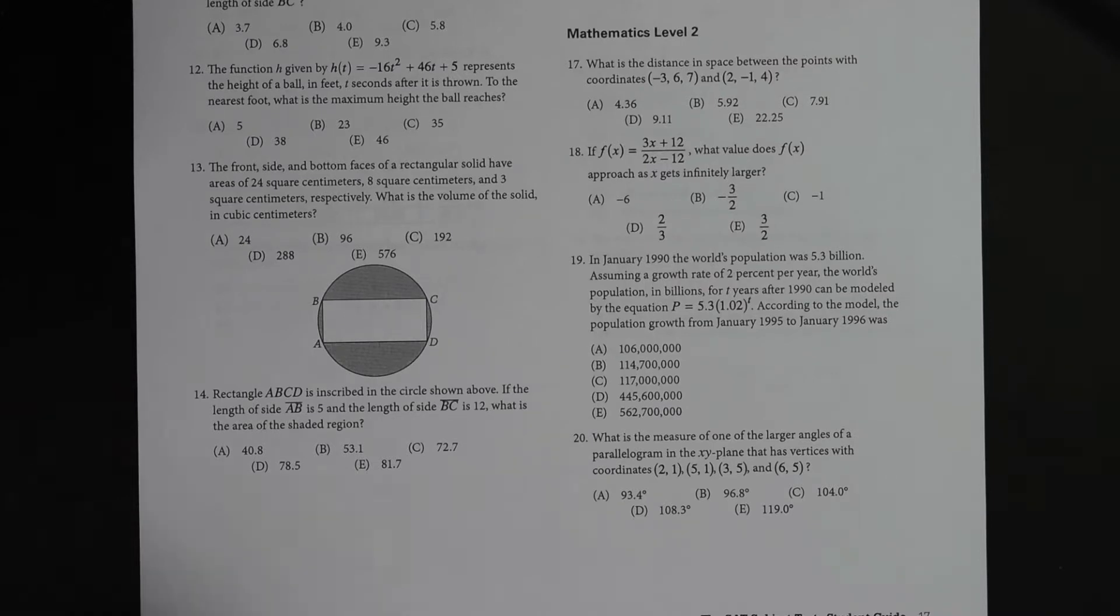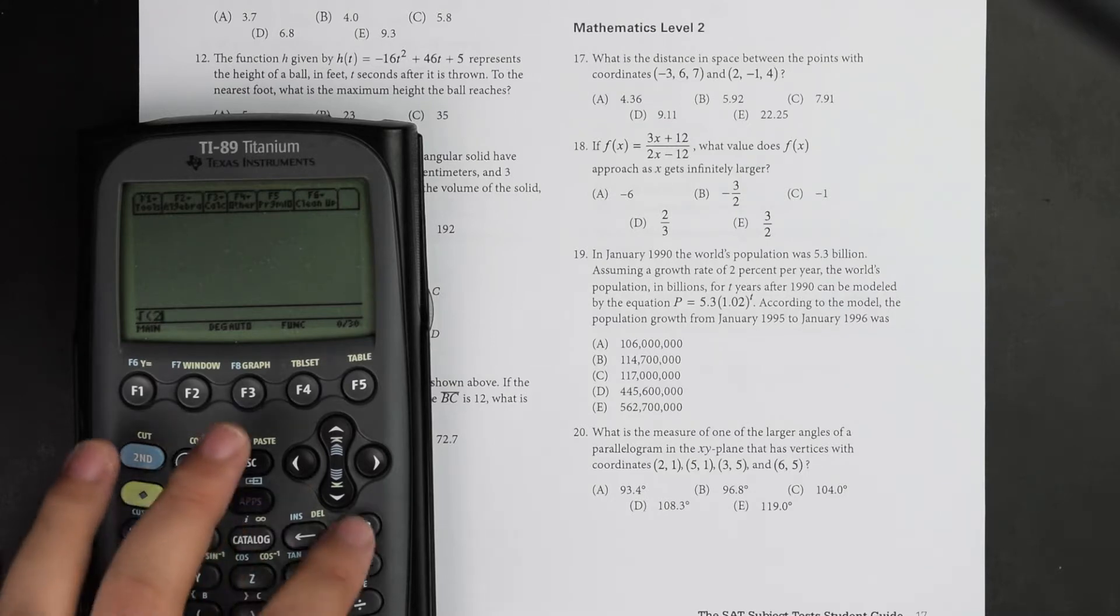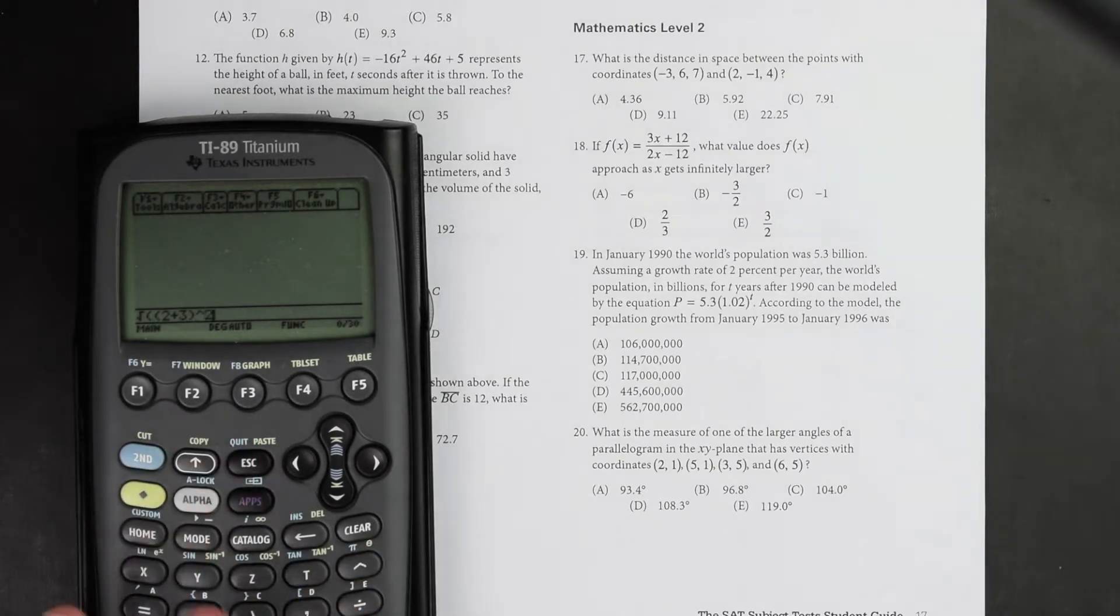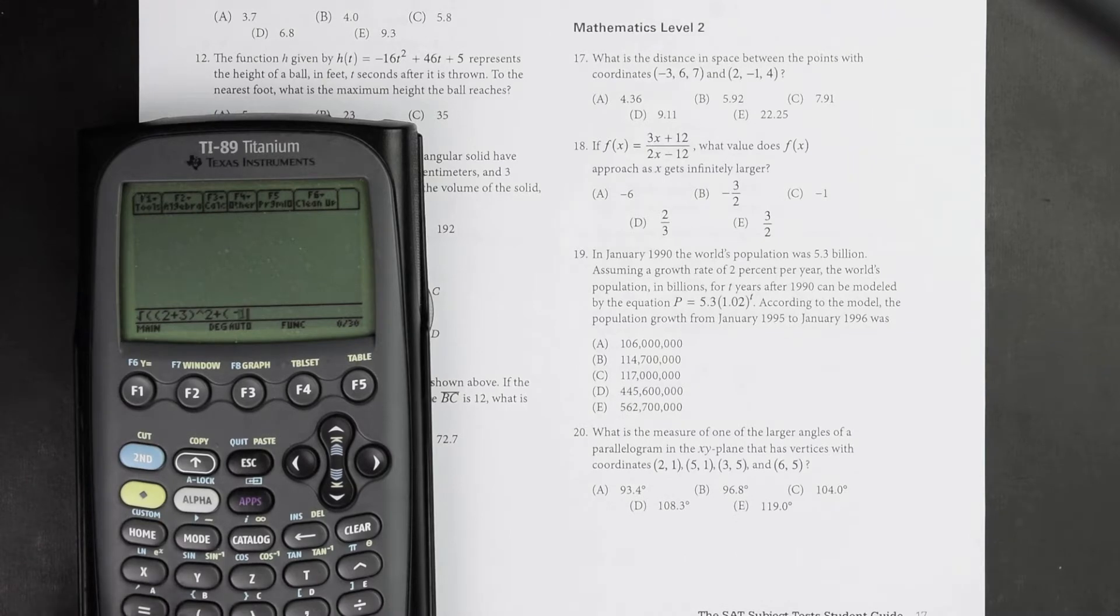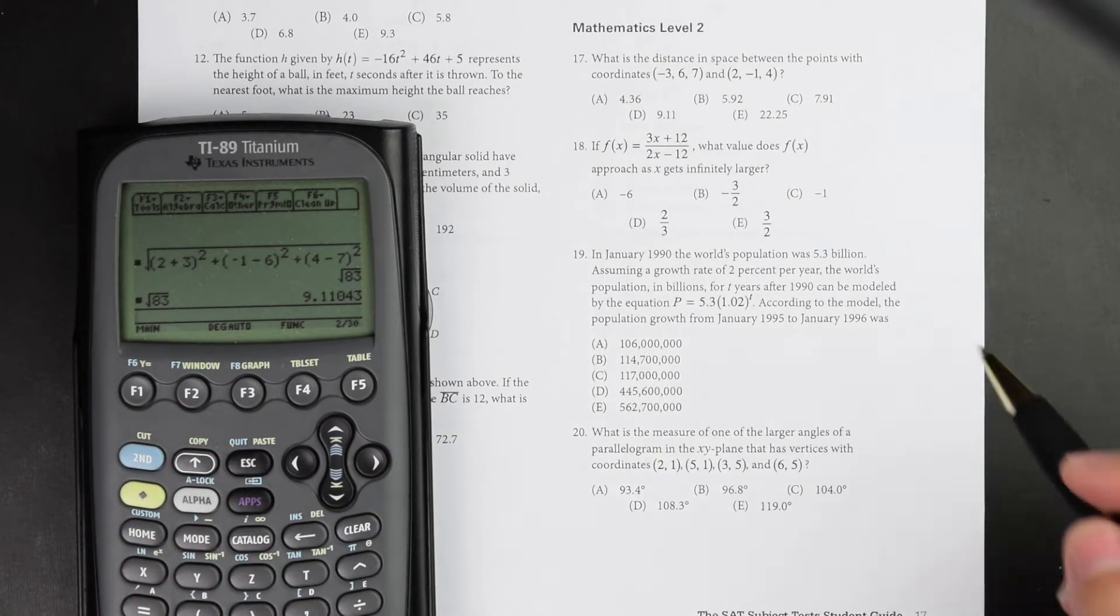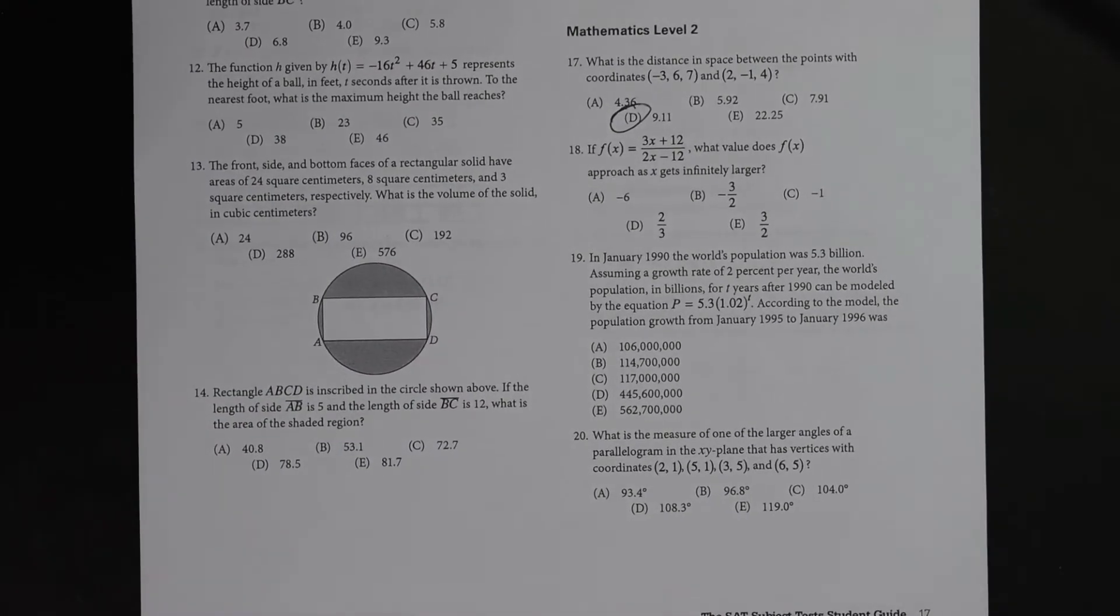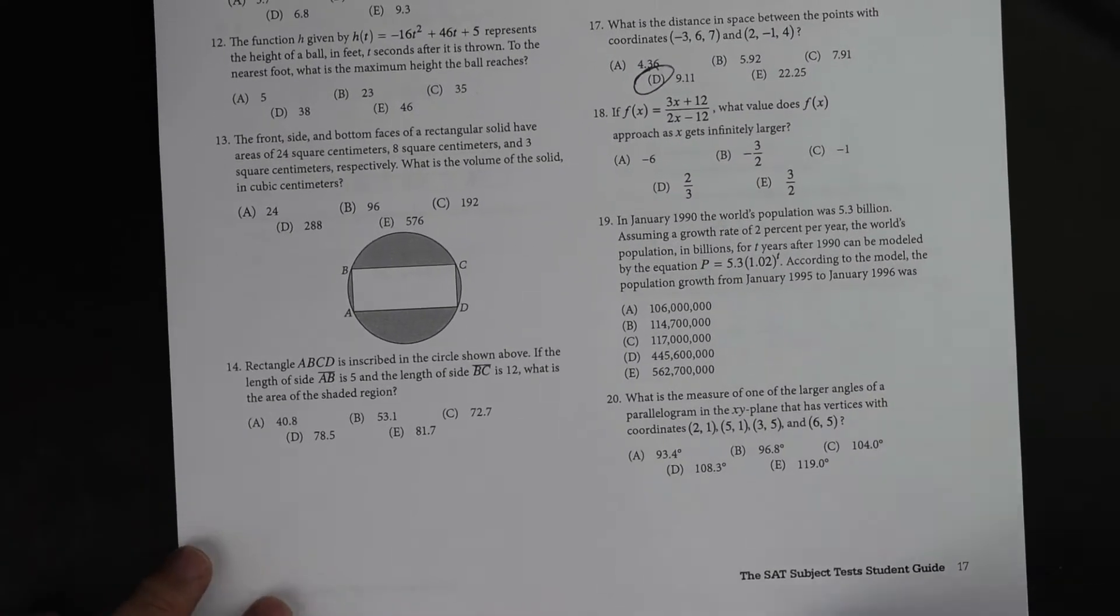So I'm going to go ahead and get started on this question. So for number 17, what is the distance in between the points... So for my first answer, my answer is going to be D for number 17. And so now I'm going to go ahead and explain to you how I was able to get to D so quickly. And so for number 17, the thing you need to remember is that there is a formula that is important in order to find distance between two points.